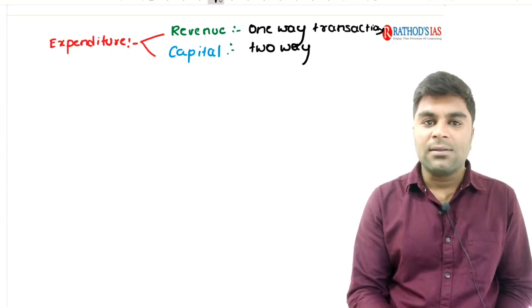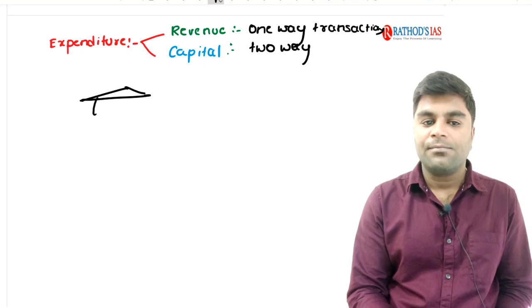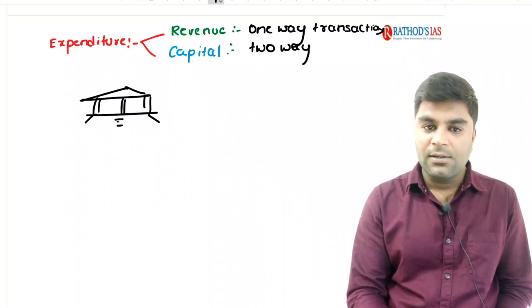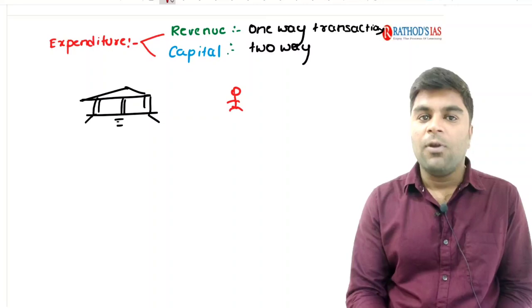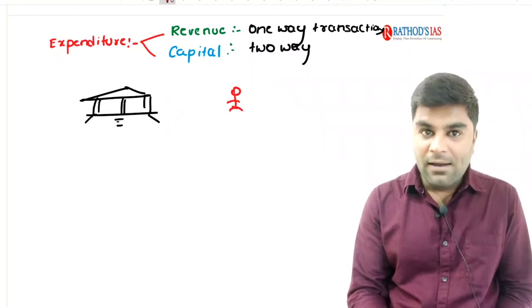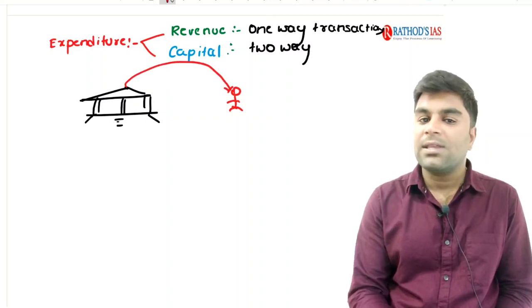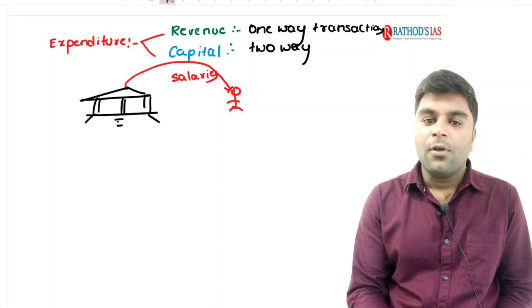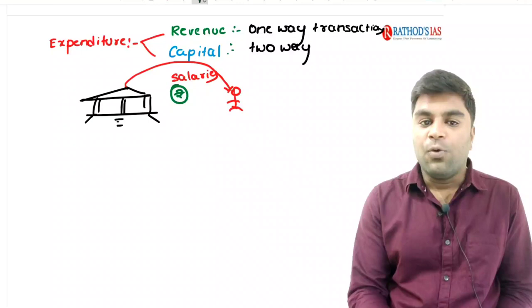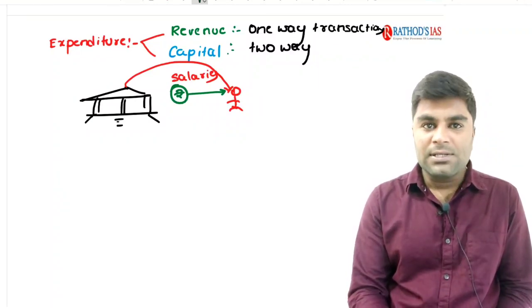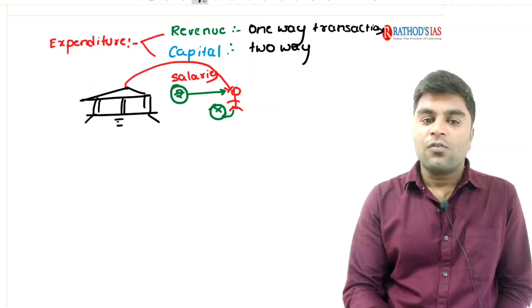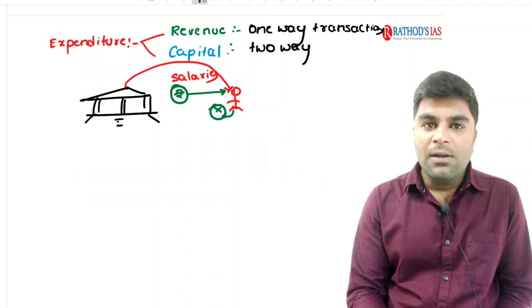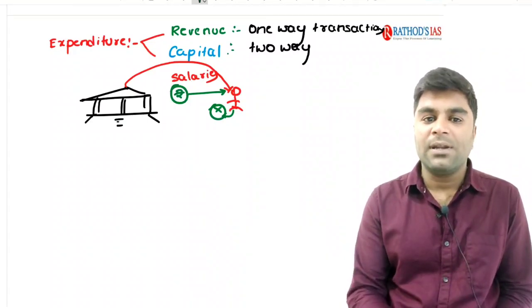All one-way kind of transactions are called revenue expenditures, and all two-way kind of expenditures are called capital expenditures. For example, imagine the government pays salaries to employees — people working in the defense forces and central government. Once the money is paid to these persons, this person is not going to pay it back to the government at any cost. We call these one-way transactions revenue expenditure.